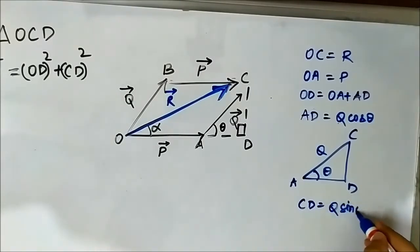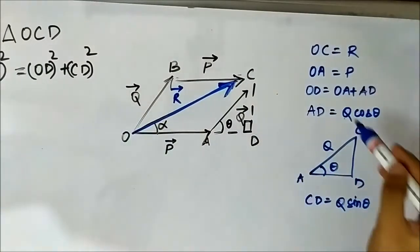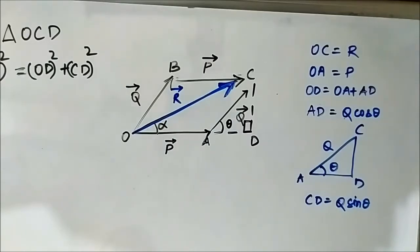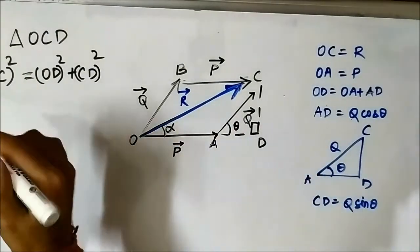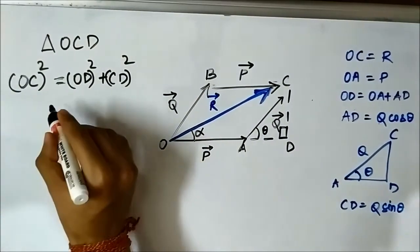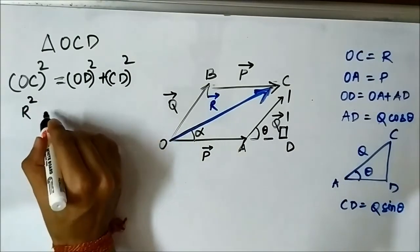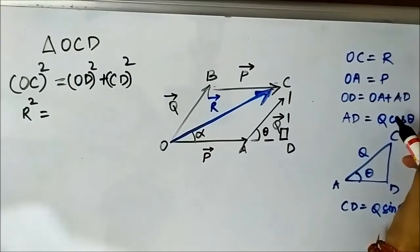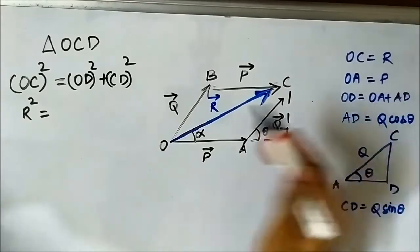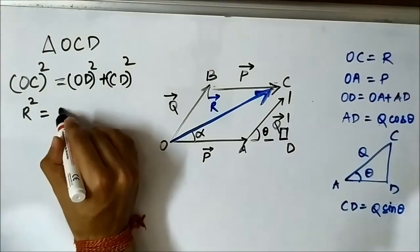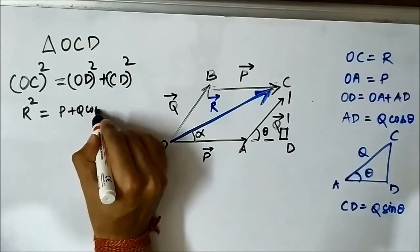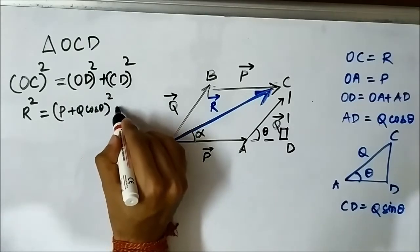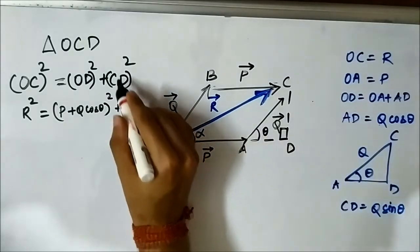This is the same approach as in the triangle law of vector addition — CD is Q sin θ. Substituting these values: OC² becomes R². OD is OA plus AD, and OA is P, AD is Q cos θ. So it becomes: R² = (P + Q cos θ)² + (Q sin θ)².